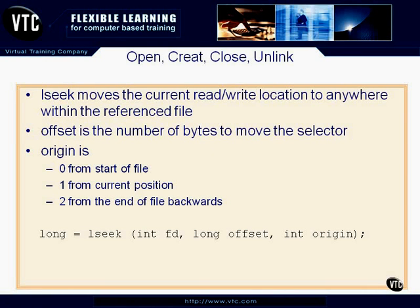The operations we've talked about so far — read and write — always occur from the beginning of the file. That's not always practical. If we're going to do a random access setup where we need to go into the middle of the file and read a record, add records, or replace information, we need a way of seeking back and forth. It's called seeking because the head on the disk drives would seek a location. So we're going to use lseek, which returns a long and moves the current read and write location to anywhere within the open file.